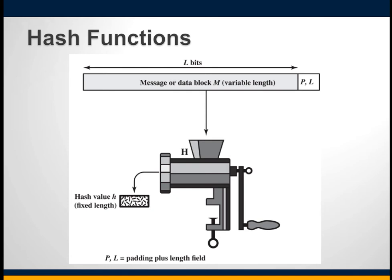A hash function is an alternative to the message authentication code. Like a MAC, a hash function accepts a variable-size message as input and produces a fixed-length output. The message is padded out to an integer multiple of some fixed block length — for example, if your block is 1024 bits and your message is only 1022 bits, the remaining two bits are padded to make a complete block. The length field is a security measure to increase the difficulty for an attacker to produce an alternative message with the same hash value.